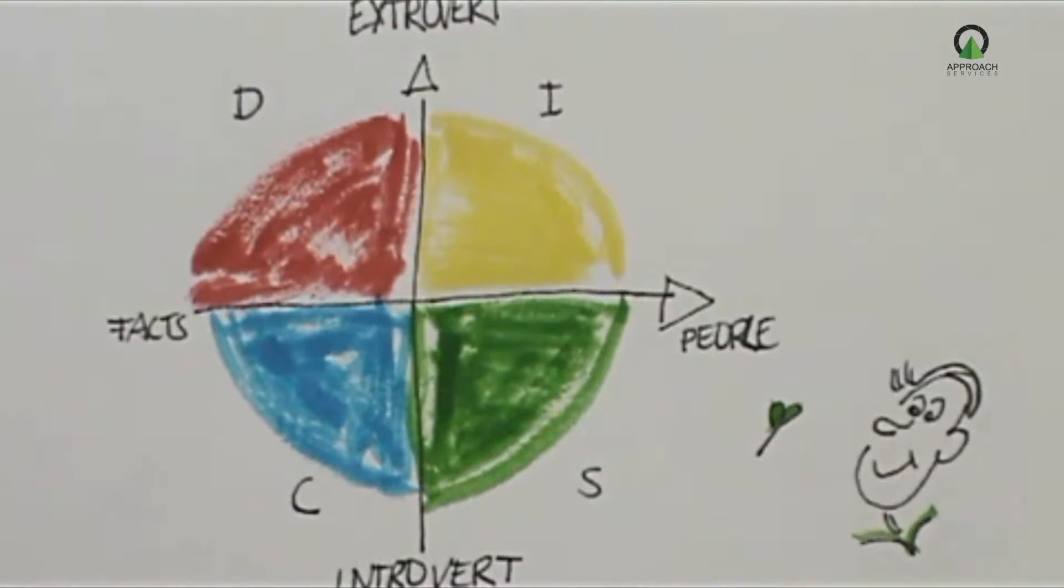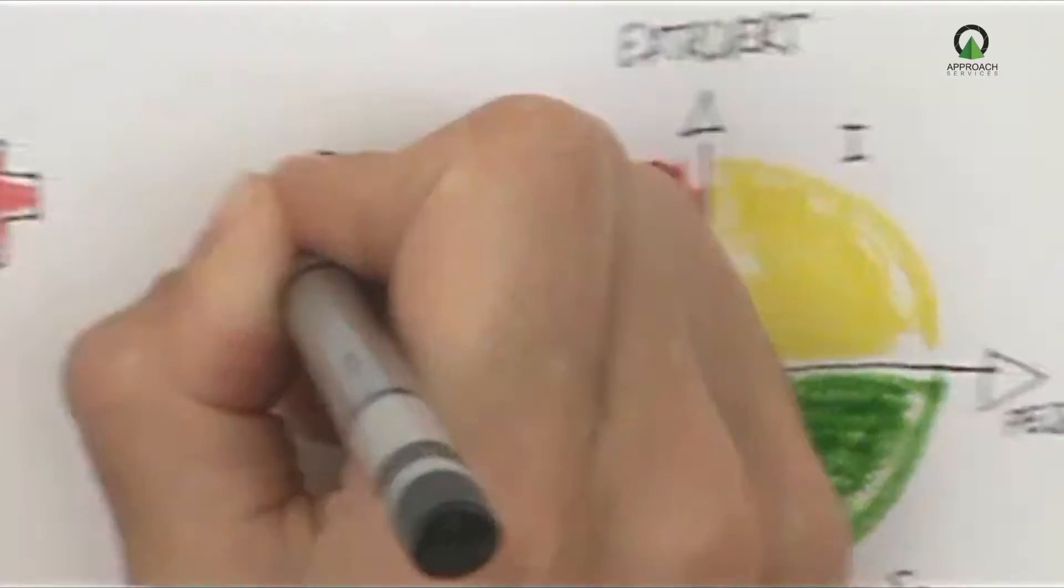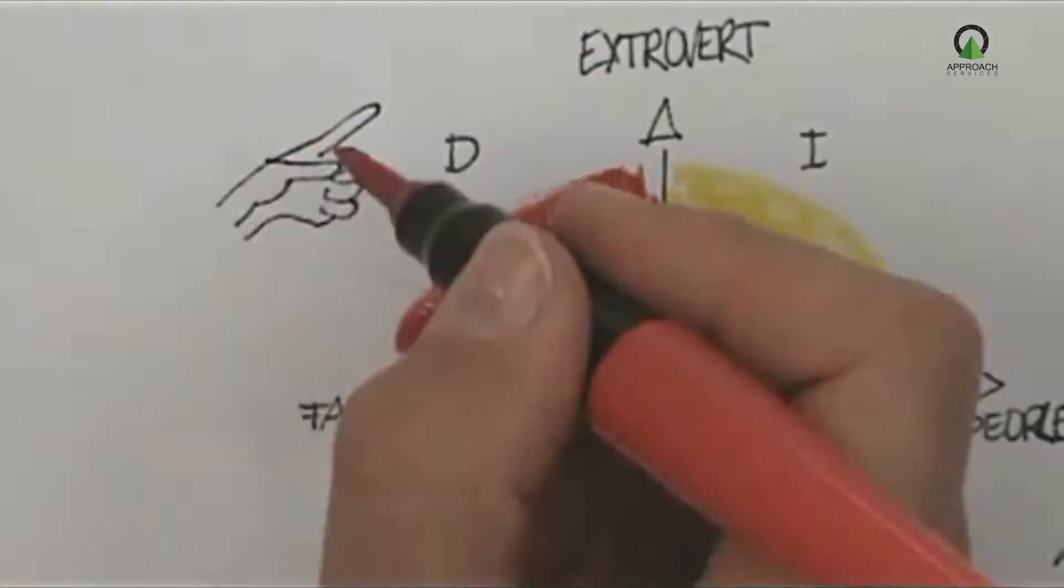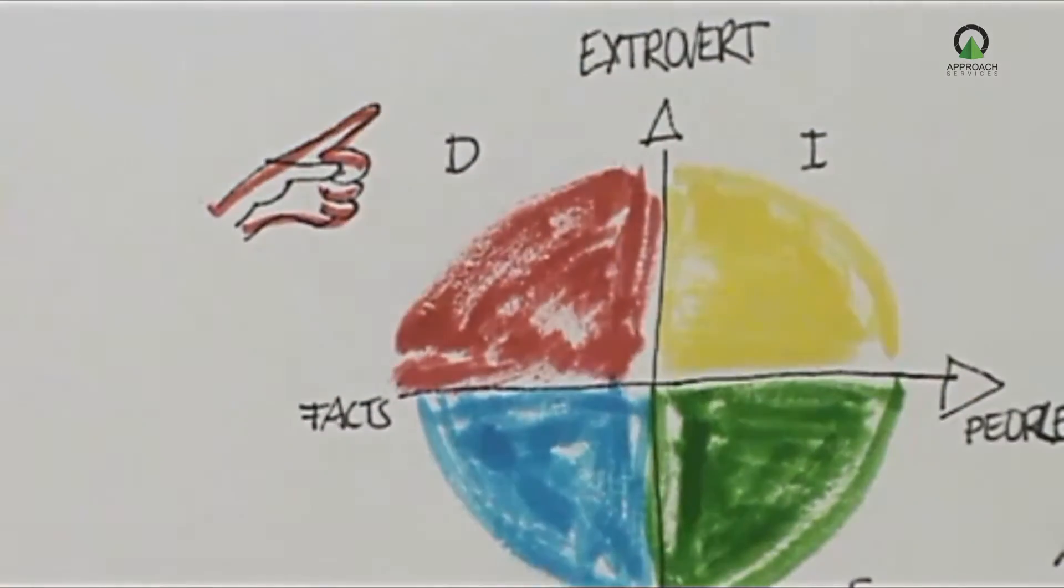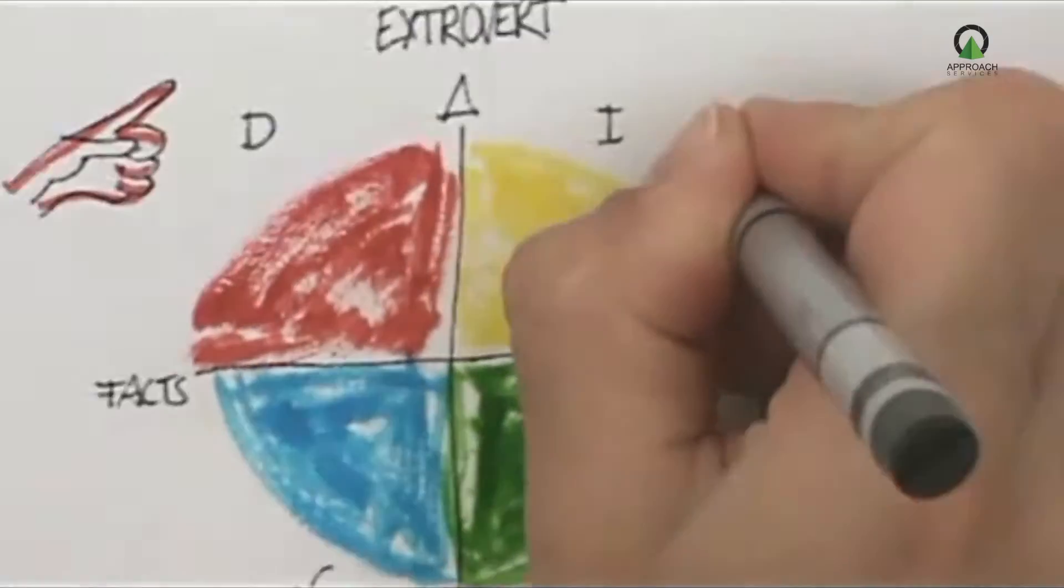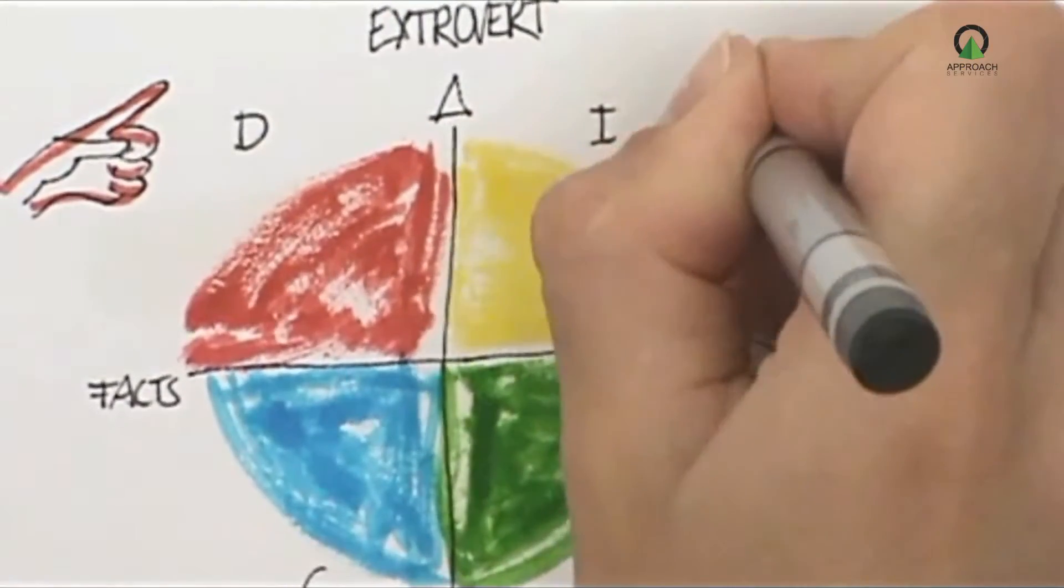Every color has their own preferences as to how they interact, communicate, and behave with other people. Every person has all four energies but to a different degree.